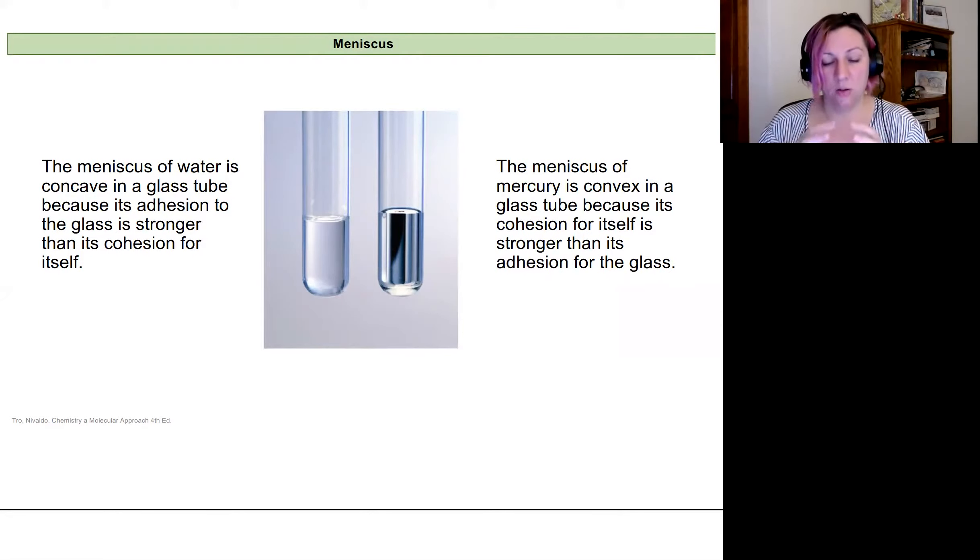And so that there's a stronger pull in to minimize that attraction to the glass. So the mercury is trying to maximize mercury-mercury attractions and minimize mercury-glass interactions because they're weaker.